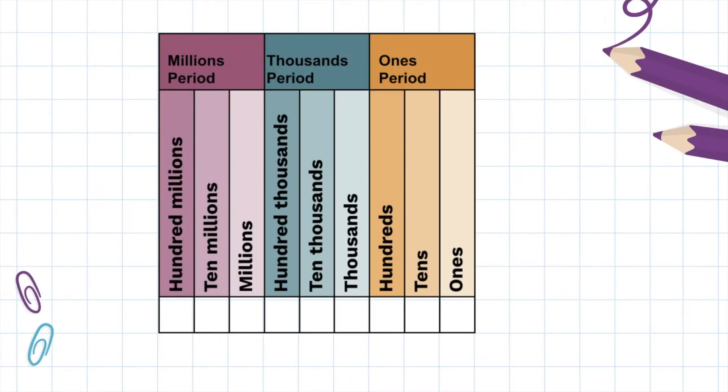Reading large numbers. Let's begin by reviewing a place value chart. We can see that there are different periods made up of three places each. It's important to get familiar with the places of each period and know that there's three places in each period because we're going to have to separate those periods when we write our number.